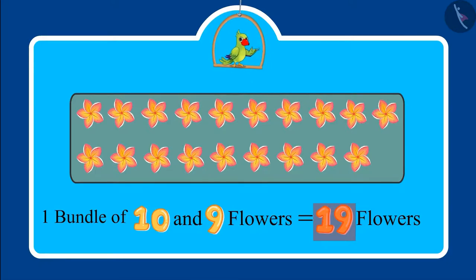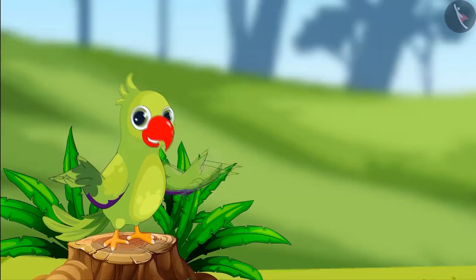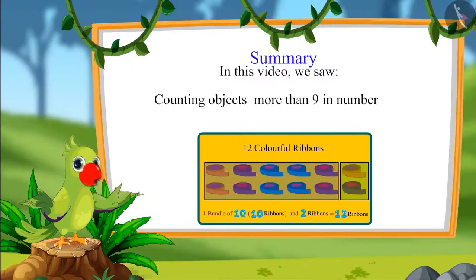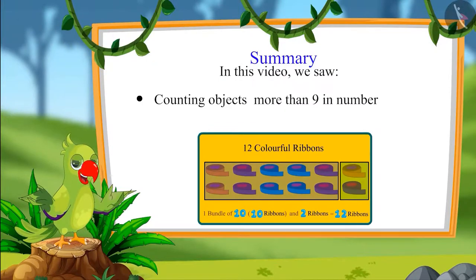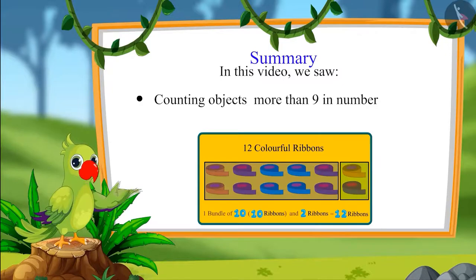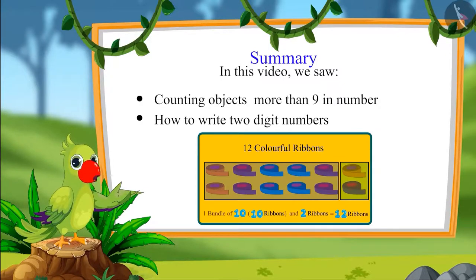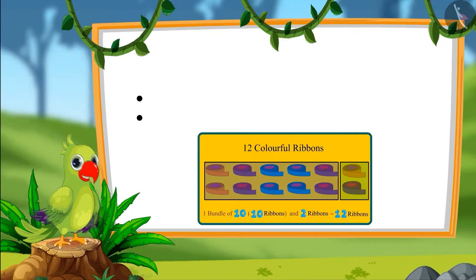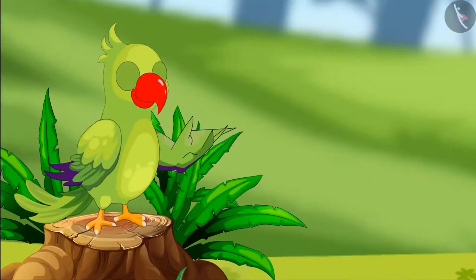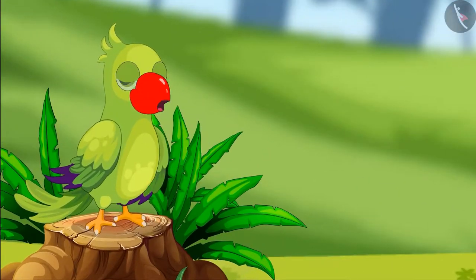That was all for today. In this video we saw some more examples and common mistakes while counting objects that are more than nine in number, and also saw how to write two-digit numbers. I hope you have understood this topic very well. Bye friends!